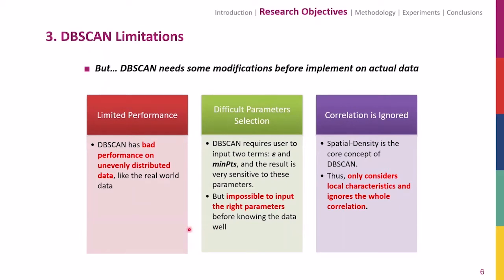However, DB-SCAN needs some modifications before implementing on actual data due to some limitations. First, DB-SCAN has bad performance on unevenly distributed data. Second, DB-SCAN requires users to input parameters, and users typically need to try many times to find optimal values. Third, when clustering, DB-SCAN only considers local characteristics but there is no correlation between points and the whole cluster. So the objective of this research is to optimize DB-SCAN to solve those limitations and then use the enhanced DB-SCAN to cluster historical AIS data to model marine transportation.